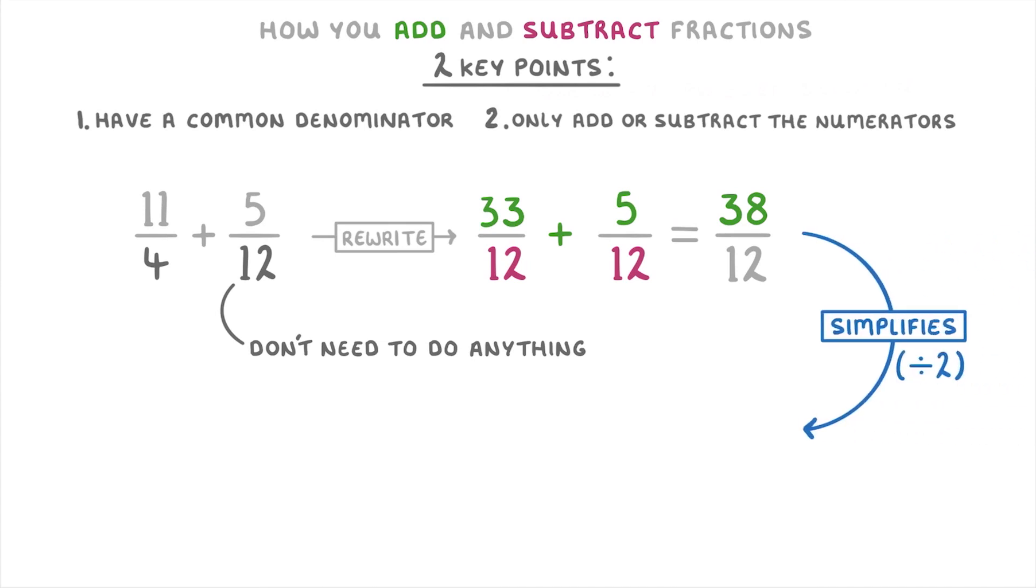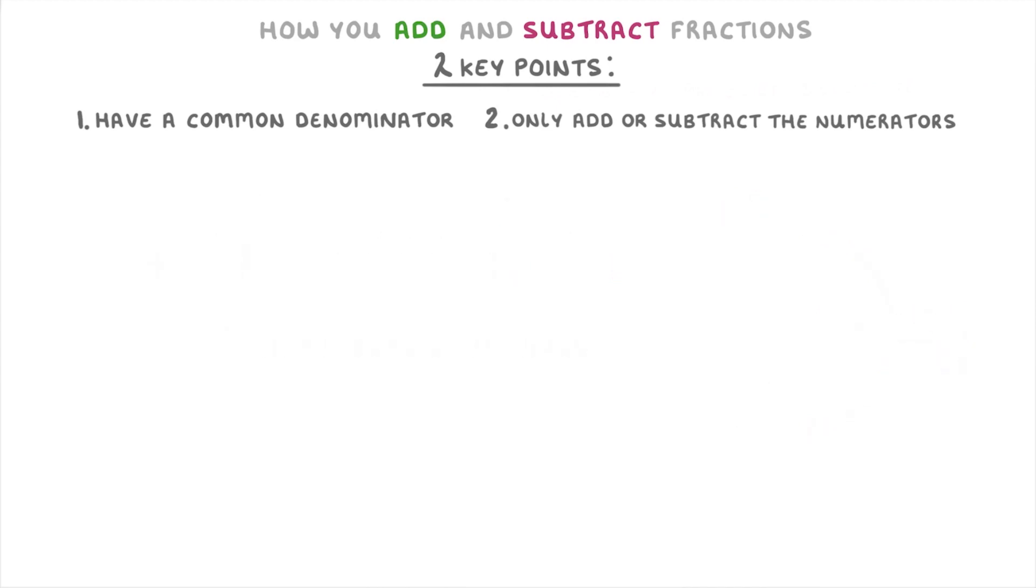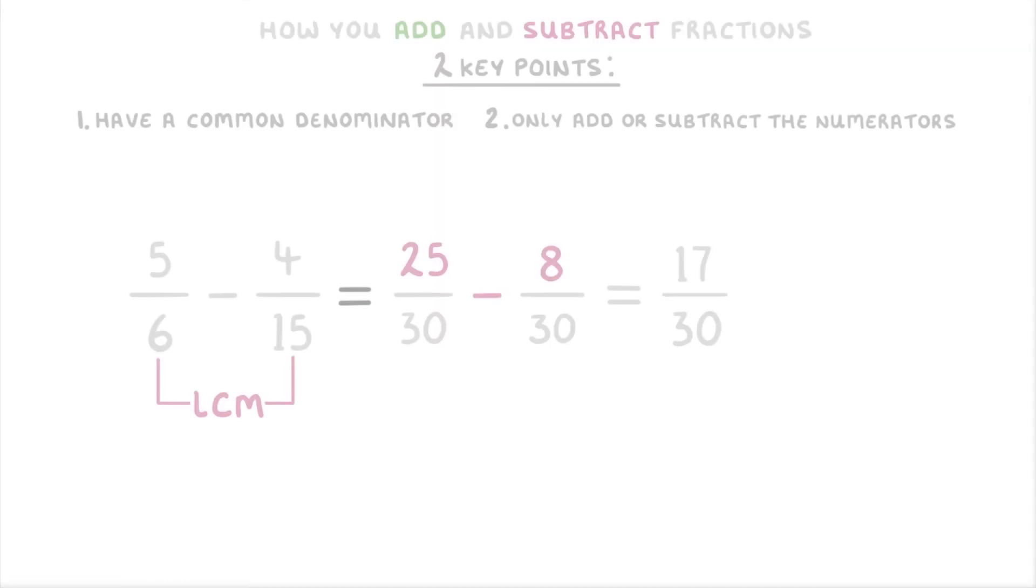In this last one we're doing 5/6 minus 4/15. The lowest common multiple of 6 and 15 is 30. To get from 6 to 30 we have to multiply by 5, so we also multiply the 5 by 5 to get 25. To get from 15 to 30 we multiply by 2, so we also multiply 4 by 2 to get 8. Then by subtracting the numerators we get 25 minus 8 to end up with 17/30.